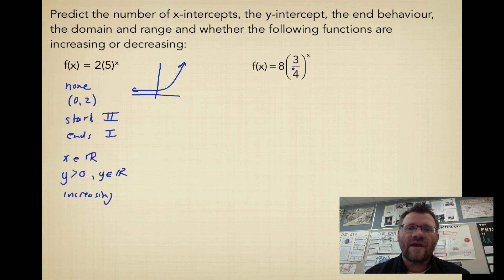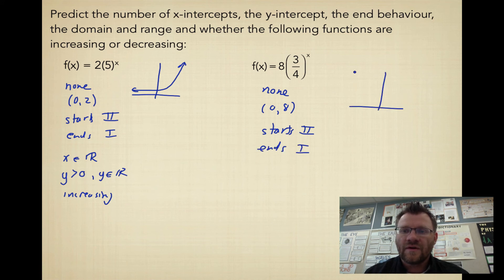The other function, f of x equals 8 times 3 quarters to the x, it also has no x-intercepts. The y-intercept, though, is going to be at 8 because if we let x equal 0, 3 quarters is raised to the power of 0, which is just 1. So we get 0,8. It also starts in 2 and ends in 1. It just looks a little bit different because this function decreases from left to right.